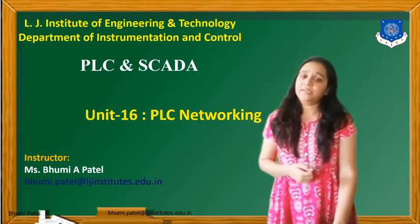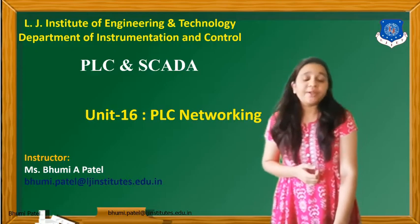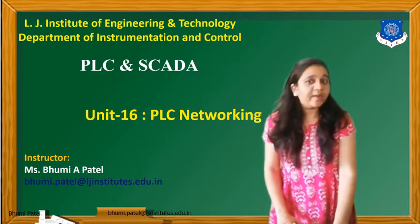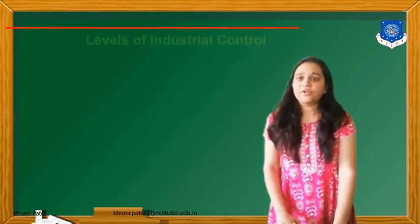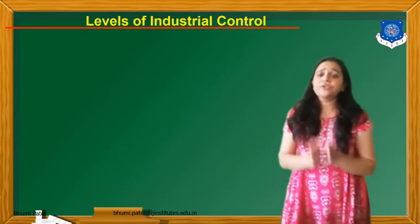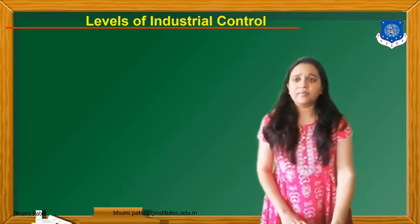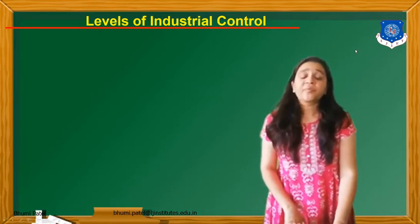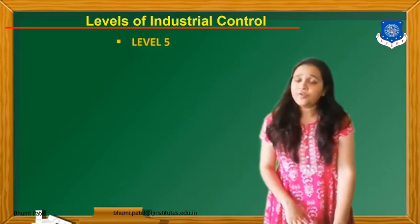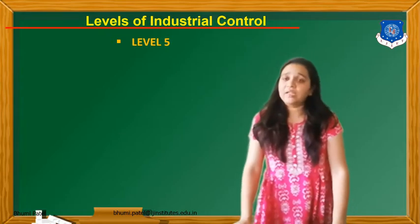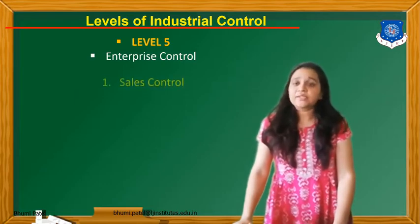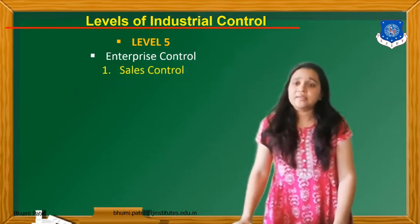Whenever we deal with the PLC, we use different types of networking in PLC programming as well as PLC hardware. There are different levels of industrial control used for PLC Networking. In general, we have a total of 5 levels of industrial control. Level number 5 is known as the Enterprise Control Level.